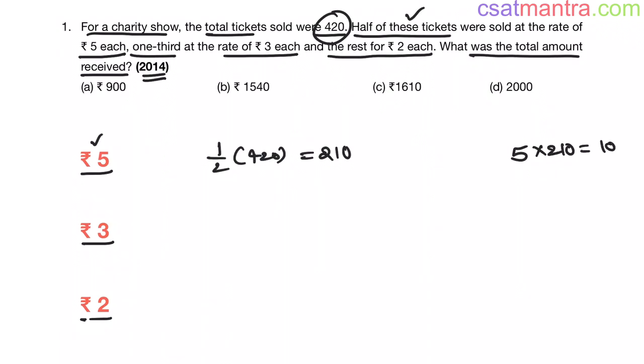Now 3 rupees tickets, how many of them? One-third of total number of tickets, 420. That's 140 tickets. Now the total amount collected by 3 rupees tickets: 3 into number of 3 rupees tickets, this is equal to 420.